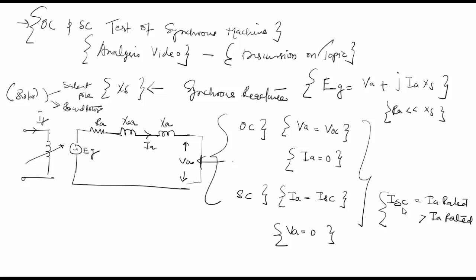My EG is equal to ISC into XSC during the case when I am having a short circuit. In that case my XS is given as EG divided by ISC. But at the same time when I am having an open circuit voltage when the current is equal to zero this part will be equal to zero. So my VOC will be equal to EG in that case.